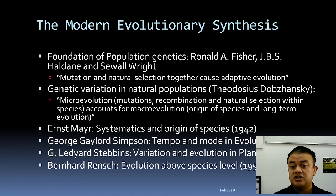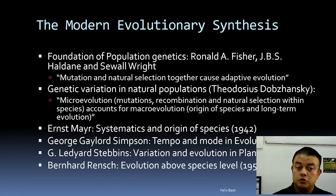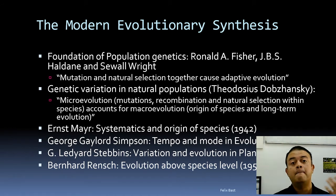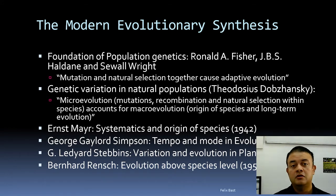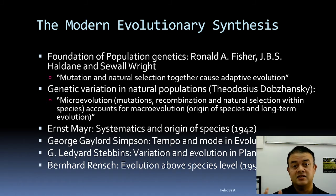Theodosius Dobzhansky, the Russian-American geneticist, contributed the idea of genetic variation in natural populations. His statement is that micro-evolution — mutation, recombination, and natural selection within species — accounts for macro-evolution, which is the origin of species and long-term evolution. For macro-evolution you look at fossil data; for micro-evolution you look at DNA sequence data. Micro-evolution accounting for macro-evolution is a key synthesis that Dobzhansky articulated.